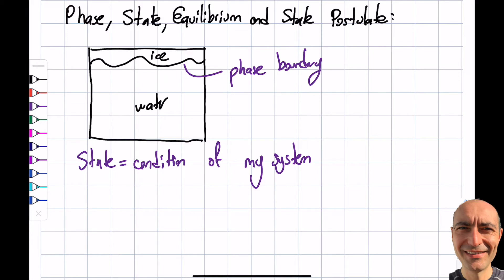But at the same time what it means is the properties are point functions, they're independent of the path taken. So my properties are independent of how I arrived at that particular state. In this class I'm gonna look at things at equilibrium.